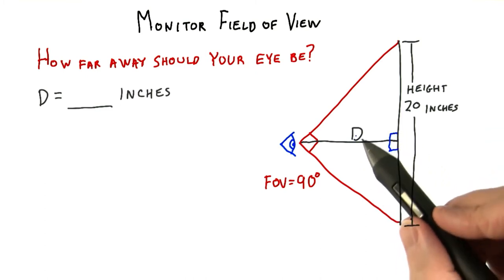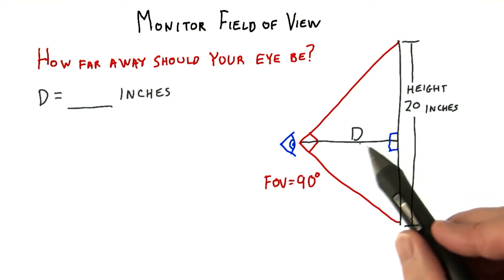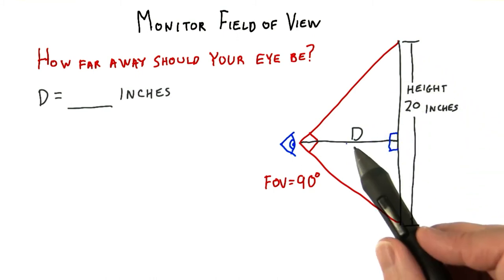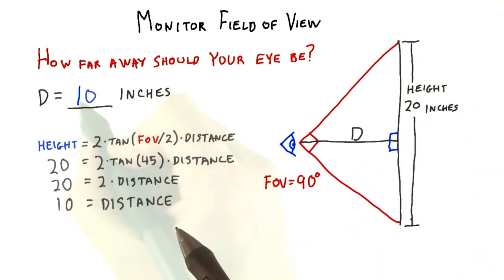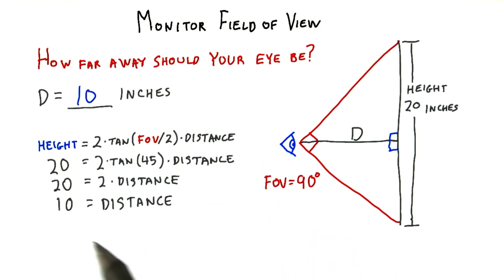What that means is that these two legs of the triangle must be the same. So, half of the height — distance equals 10. However, if you use the formula, that's fine too. You'll get the same answer.